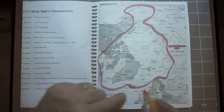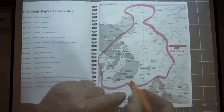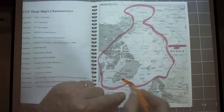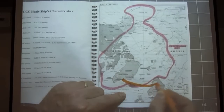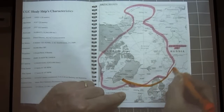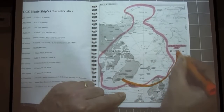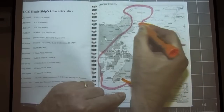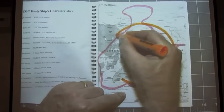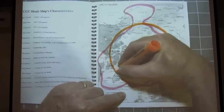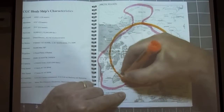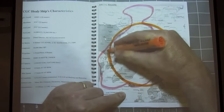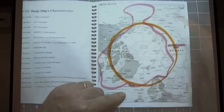Compare that to the definition of the Arctic Circle, which I'm going to highlight in orange at 66 and a half degrees north latitude, and you can see that the two definitions don't totally match each other.